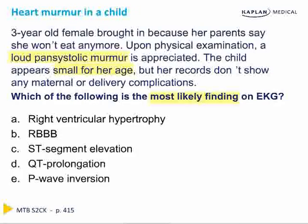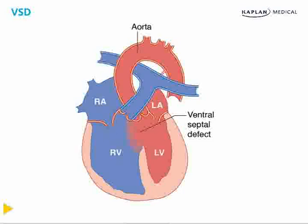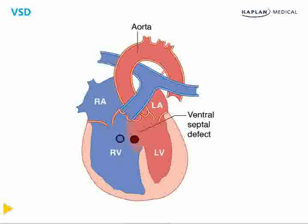With a better understanding of VSD, let's revisit the vignette: loud pansystolic murmur, small for her age, and we need the most likely EKG finding. An animation will help us understand the mechanism. In VSD, deoxygenated blood sits on the right and oxygenated blood on the left; they meet at the defect. Because the left side generates greater pressures to supply the systemic vasculature, it drives a left-to-right shunt — sending oxygenated blood back through the pulmonary vasculature, which is why this defect can go years without diagnosis.